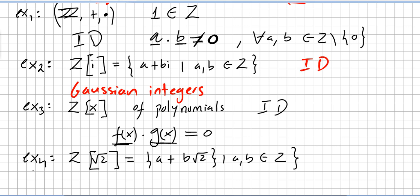Another example of an integral domain: the integers with the square root of two adjoined, defined as the set {A + B√2} such that A and B are integers. You can check that this is a commutative ring with unity and has no zero divisors, so this is also an integral domain.